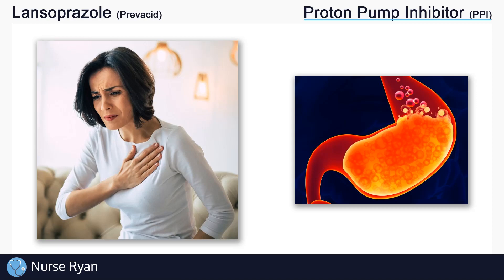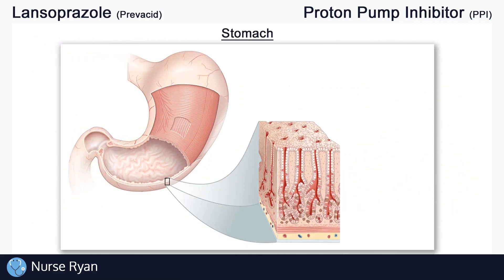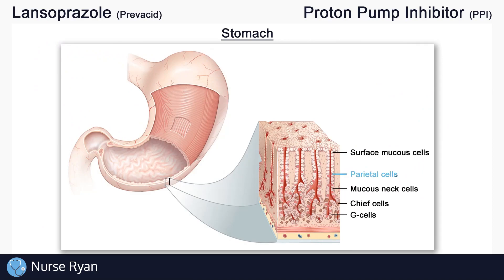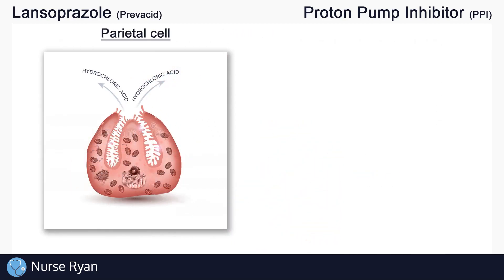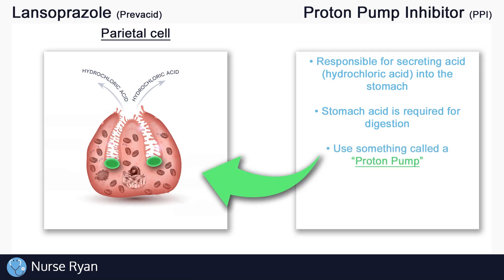To understand what a proton pump inhibitor means, we'll need to take a quick look at our stomach. In our stomach, we have lots of different types of cells. The ones that we're interested in today are called the parietal cells. The parietal cells are responsible for secreting acid into the stomach, and it's this acid that helps to break down food for digestion. Part of how the parietal cells secrete acid is by using something called a proton pump.